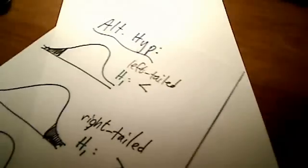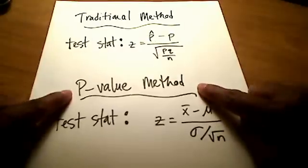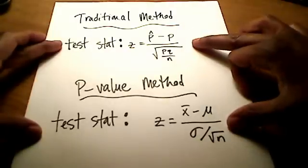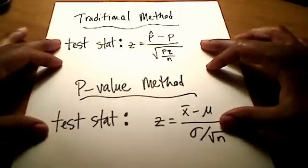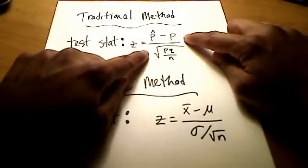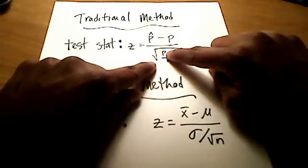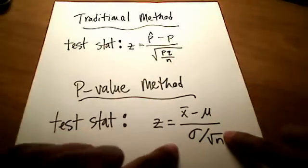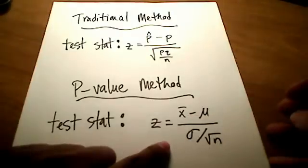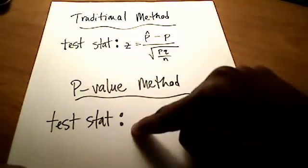So what I showed in a previous video is the traditional method. And what I'm going to show you in this video is the p-value method. But notice I wrote on this little piece of paper here that both methods, doesn't matter which method you're using, both methods require you to find a test statistic. Whether your test statistic is with proportions, that would be p-hat minus p over the square root of little p times q over n, or maybe you're dealing with sample means and population means. And so your test statistic would be z equals x-bar minus mu over sigma divided by square root of n. Regardless of the method, both of them use test statistics.